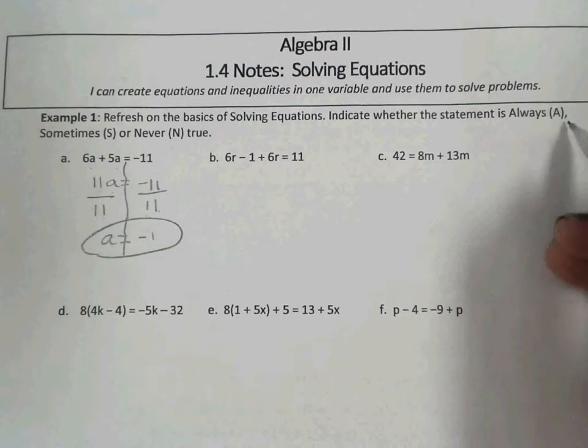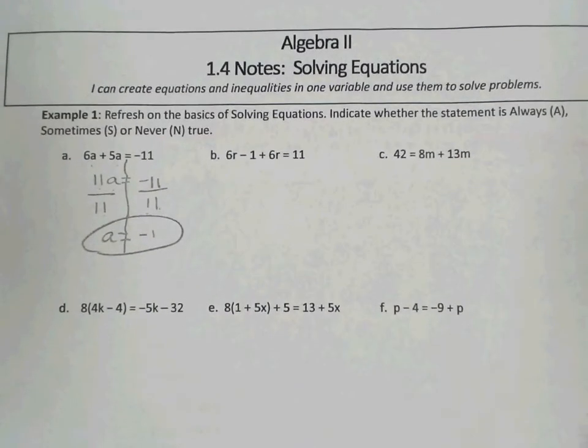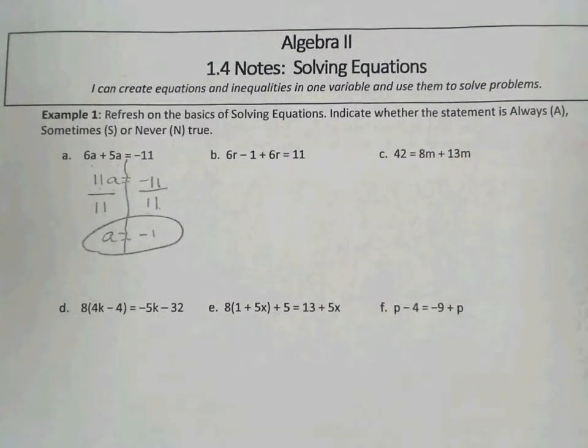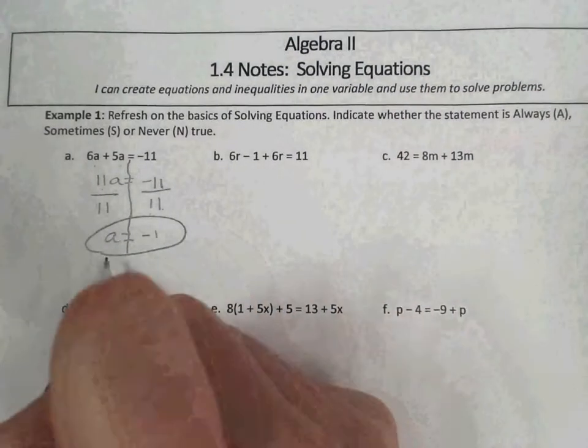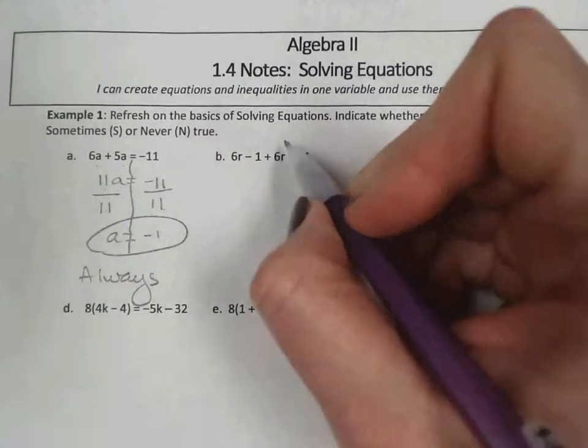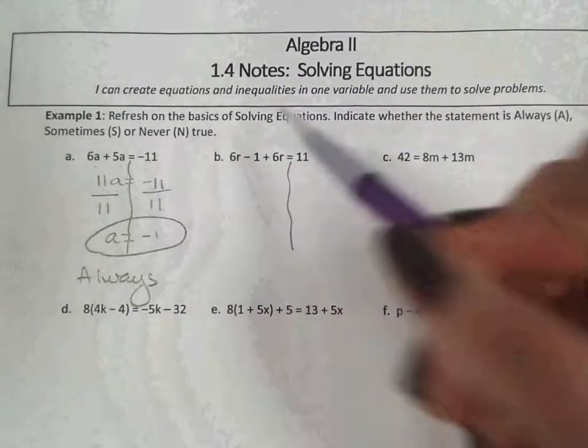Then we need to indicate whether this is always, sometimes, or never true. In other words, is there any other value that we could plug into this equation that would make it true? And there isn't. It is clearly always true. That'll make more sense when we see some examples of sometimes and never.